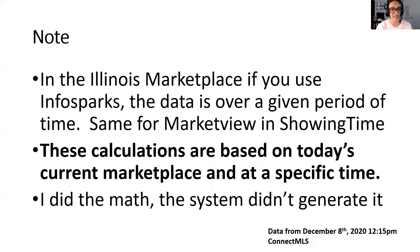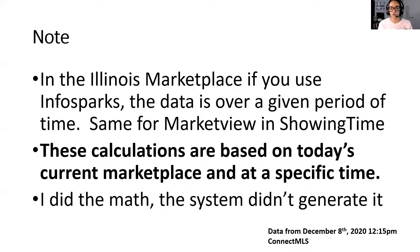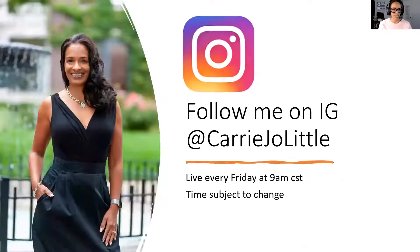Here's what you need to know. In Illinois, if you use InfoSparks, the data is over a given period of time — it's not as of that moment. That's why I wanted to show you how to calculate month supply and absorption rate in real time. This is the same for Market View and Showing Time. So if you're outside of Illinois, that's what you get. If I also sold in Florida, I would want to know how to calculate this if I didn't have Market View. These calculations are based on today's current marketplace at a specific time — I did the math; the system didn't generate it.